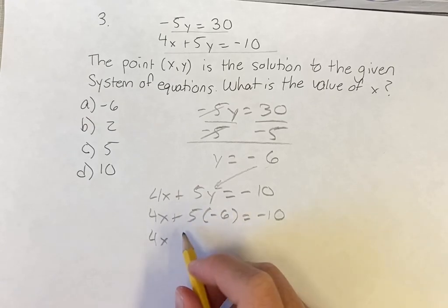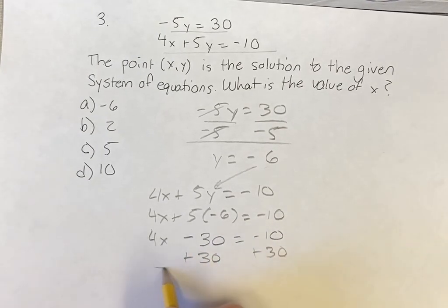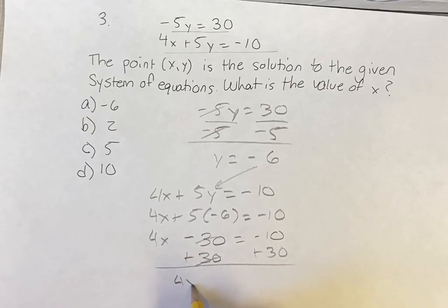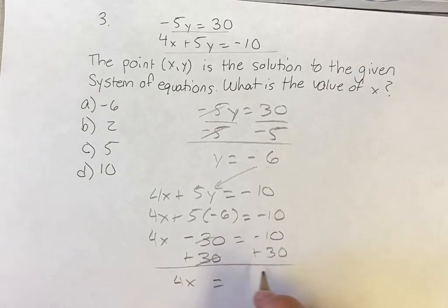Solving this out, we have 5 times negative 6, so negative 30, equal to negative 10. Add 30 on both sides to get 4x on its own. So we have 4x is equal to negative 10 plus 30, or 30 minus 10, however you want to think about it, which is 20.